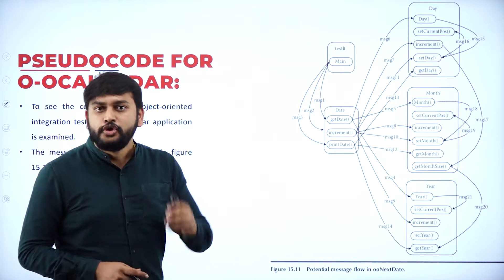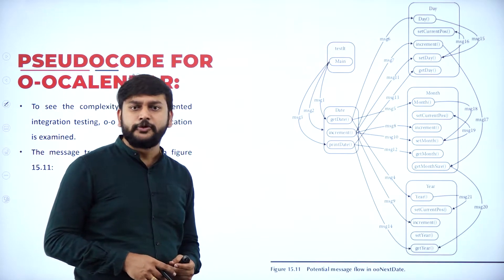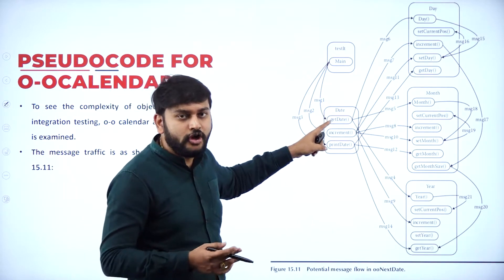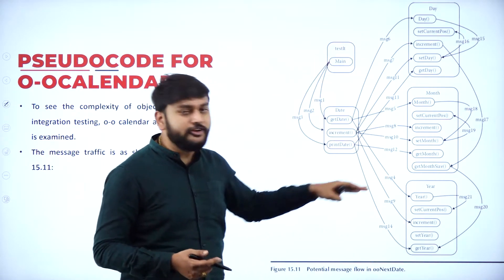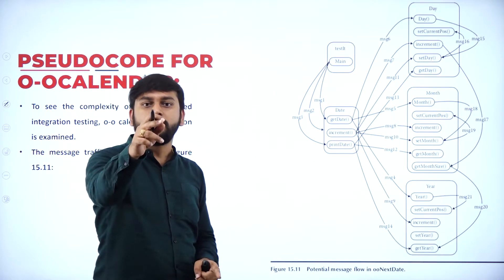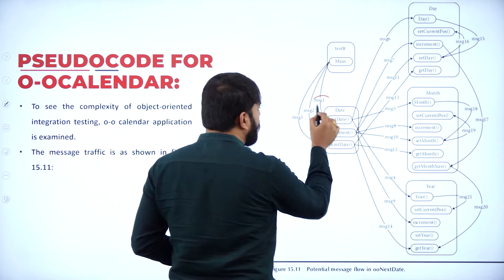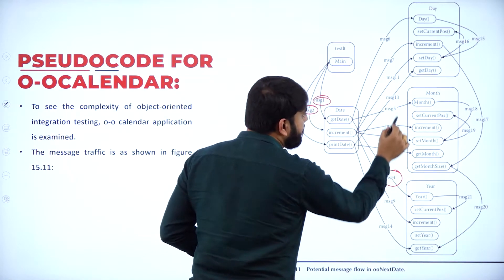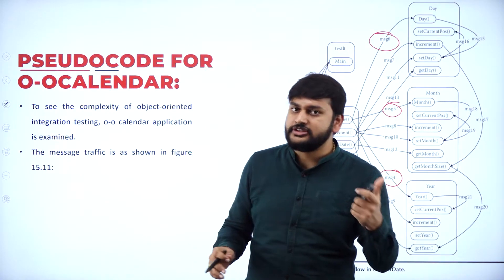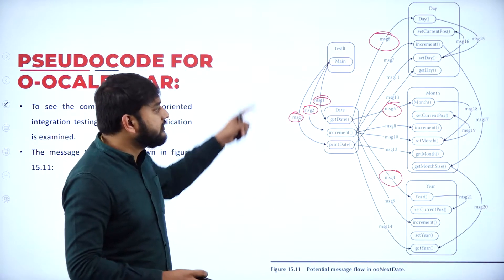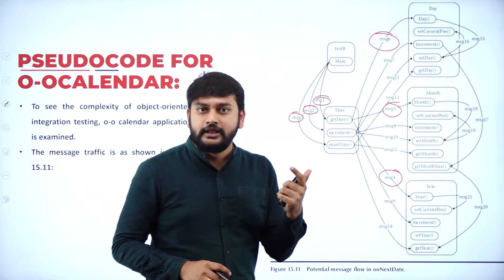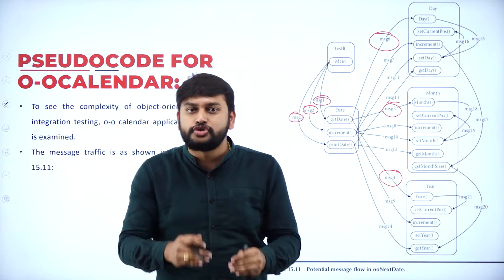The session opens with the concept of MM path. I have the next-date problem here with five different classes. You can call them functions or classes. Observe how the message is being transferred from one class to another class — message one, message two, message three, and so on, up to message 21 and more. All these messages and classes belong to the concept of the next-date problem, dealt with in an object-oriented context.